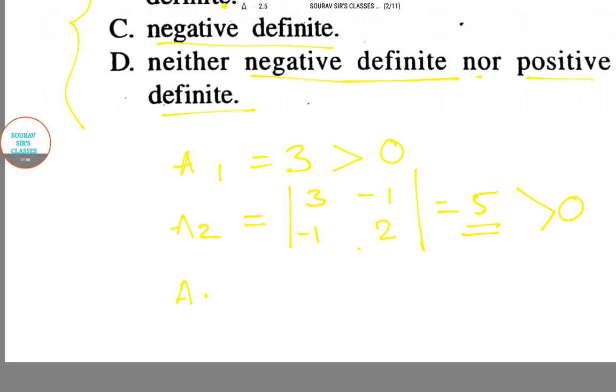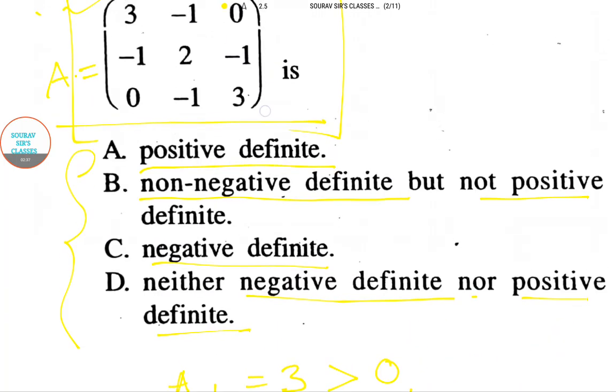For A3, the matrix will be [3, -1, 0; -1, 2, -1; 0, -1, 3]. If we solve it, we get 3 times (6 - 1) plus 1 times (1 - 3) equals 12, and 12 is obviously greater than 0.